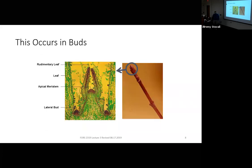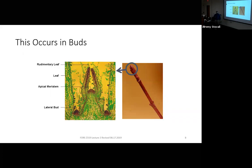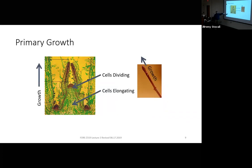When you look at how these twigs work, here's that red maple twig again where you can see the terminal bud. If you dissect within the terminal bud, you have the apical meristem here — just a mound of dividing cells — and then lateral buds, which are also meristematic tissue. You can see some rudimentary leaves and some larger leaves. You have this region of actively dividing cells, and below that region those cells elongate, which fuels growth in length of a twig. This is where primary growth comes from: cells dividing in the meristem and then elongating as they expand and fill with water.